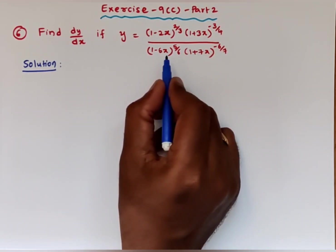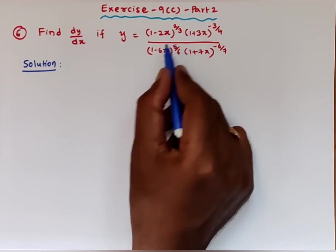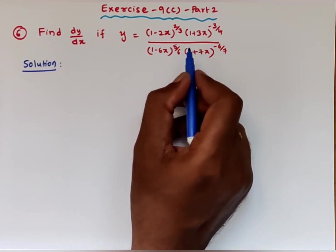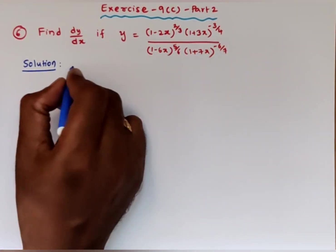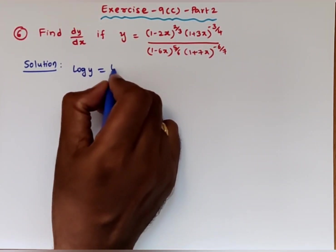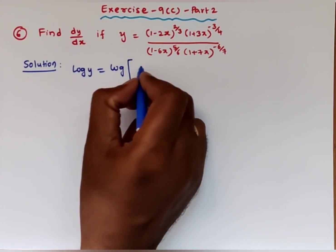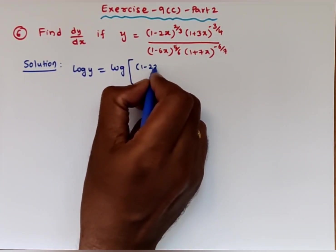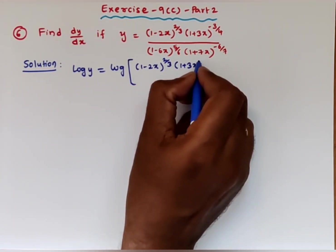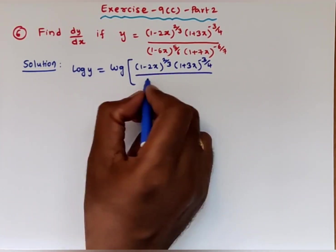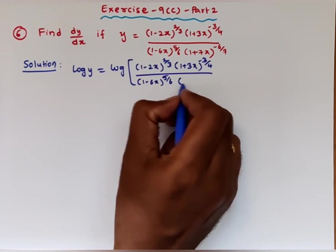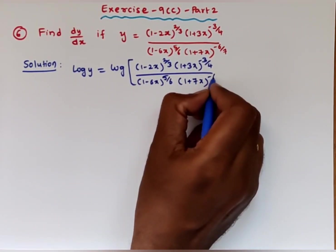Apply the logarithm on both sides. So log y equals the logarithm of (1 minus 2x)^(2/3) times (1 plus 3x)^(minus 3/4), whole divided by (1 minus 6x)^(5/6) times (1 plus 7x)^(minus 6/7).